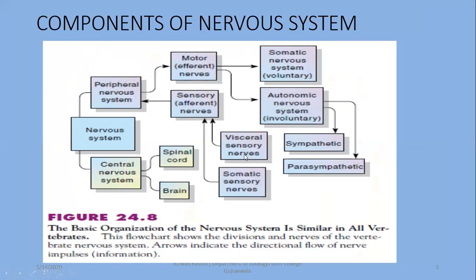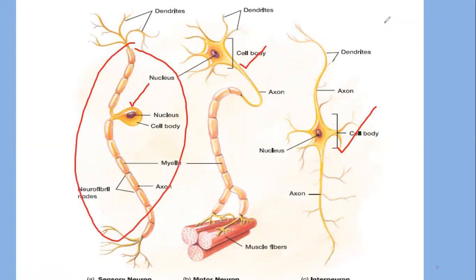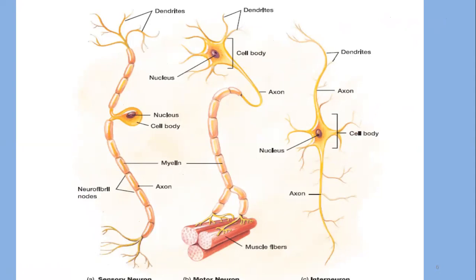Sensory neurons provide input information from visceral or somatic parts — visceral meaning inner body organs. Motor neurons provide output information. In the autonomic nervous system, you have sympathetic and parasympathetic divisions. The third diagram shown is of interneurons, also called associative or intermediary neurons. They may have other shapes and may be myelinated or non-myelinated.